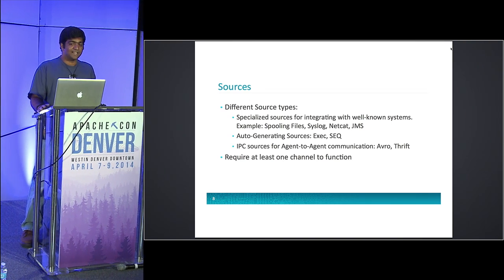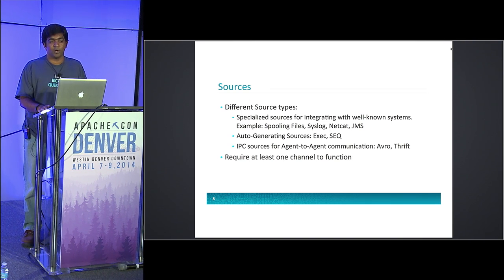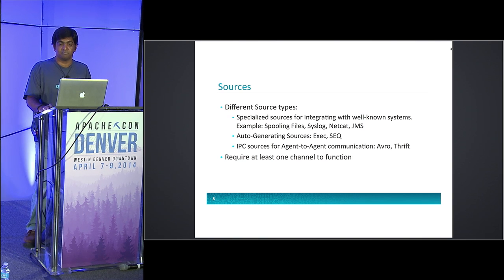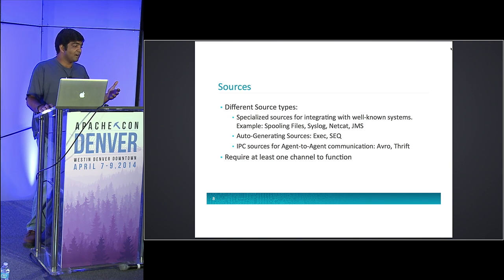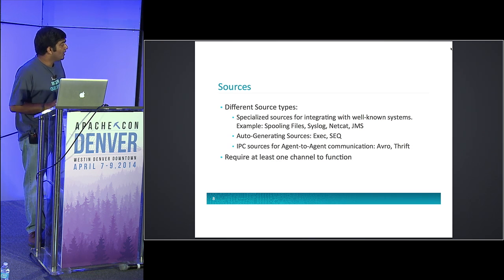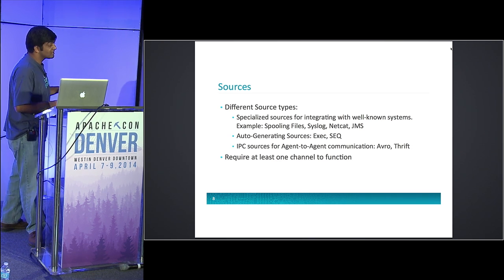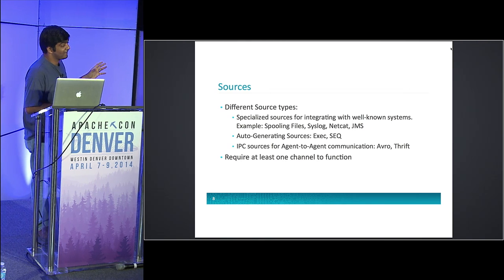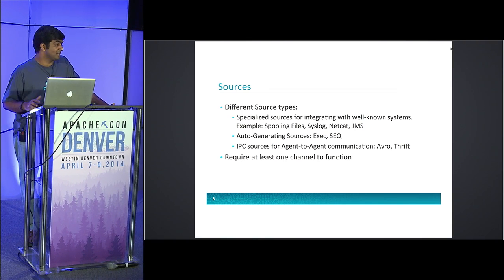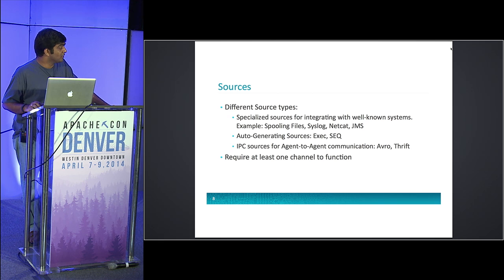Each source requires at least one channel to function. Flume sources get data from something and write it out to a channel — without a channel, they cannot function. The Flume configuration system will validate this: if a source doesn't have a channel attached, it throws away that source and reports why it couldn't be initiated.